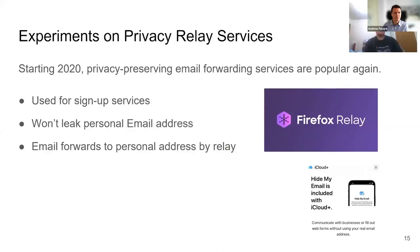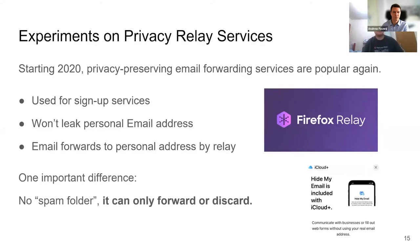Other than directly spoofing email services, we also find that privacy relay services are one of the latest forms of email forwarding applications. Starting in 2020, privacy-preserving email forwarding services like Firefox Relay and iCloud Hide My Email started to pop up and become popular. They are designed for users to sign up for services so that their personal email addresses won't be leaked or linked to the registered services. These services have a key difference from conventional mailboxes: there is no spam folder or place for them to show spoofed volumes, but they can only decide to forward to the user or discard the email.